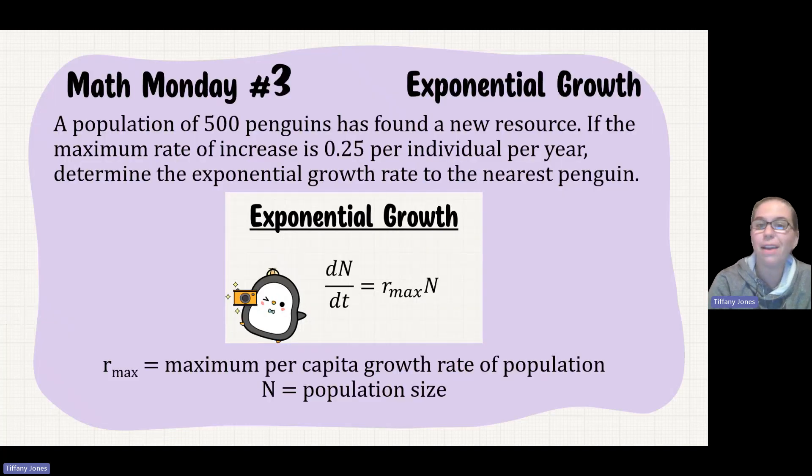A population of 500 penguins has found a new resource. If the maximum rate of increase is 0.25 per individual per year, determine the exponential growth rate to the nearest penguin. Remember that r_max is the maximum per capita growth rate of population, and N is the population size.